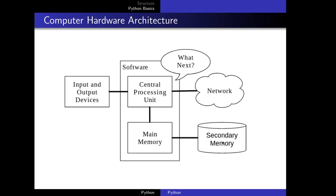Then we have secondary storage — also called secondary memory. This is slower than main memory, but the information on it will remain intact when we turn off the computer. Nowadays computers also have a network connection. The network is another place where you can retrieve information, but it is slower than secondary storage memory.